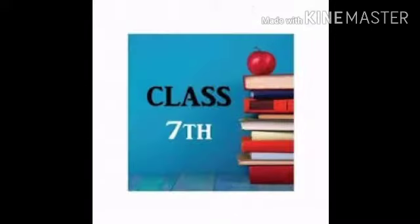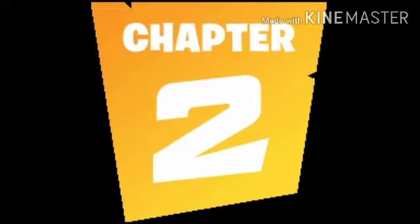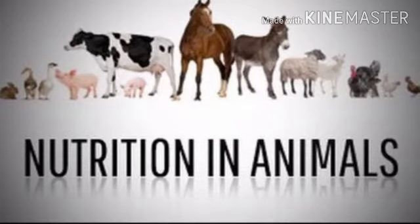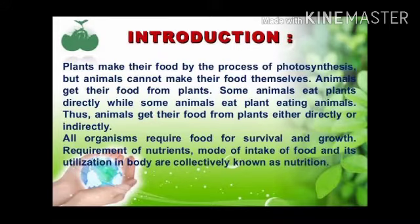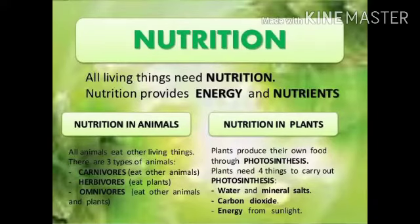In the previous chapter, we read about nutrition in plants and the different types of nutrition found in different types of plants. In this chapter, we will study about nutrition in animals, the digestive system of humans, and digestion in ruminants. The process of obtaining and utilizing food to obtain energy is called nutrition. Plants can make their own food by photosynthesis, but animals cannot, so they depend on plants for food. Nutrition is basically of two types: autotrophic and heterotrophic. Autotrophic nutrition is found in plants and heterotrophic in animals.